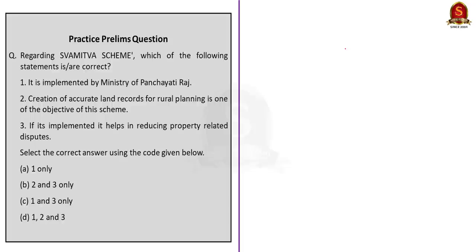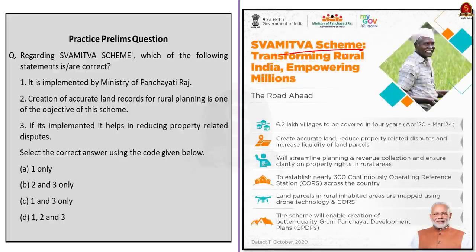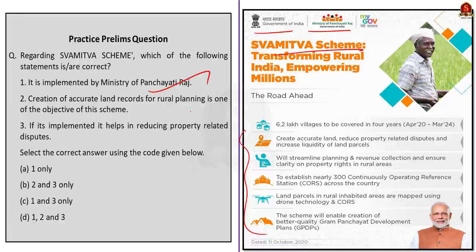The practice question I gave you was a three-statement question about the SVAMITVA scheme. Before answering, look at the ad for the scheme carefully — even the logo of the Government of India and the Ministry of Panchayati Raj mentioned in the ad are important. Whenever you look into a scheme, if a question is asked about which ministry controls it, you can easily answer by analyzing the ad. The first statement — that it is implemented by the Ministry of Panchayati Raj — is correct, as mentioned in the ad.